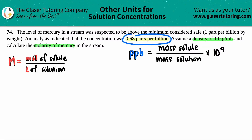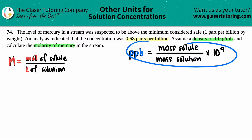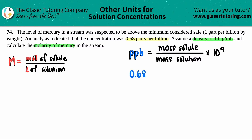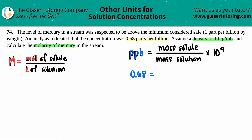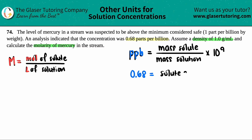They didn't give us masses directly, so I have to work with the ppb formula first. I'll set up: 0.68 = (grams of solute / grams of solution) × 10⁹. I'll keep everything in grams since the density was given in grams.